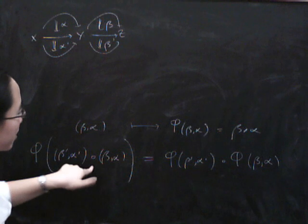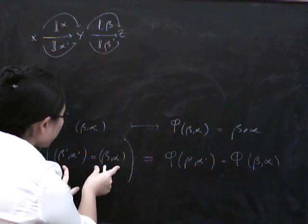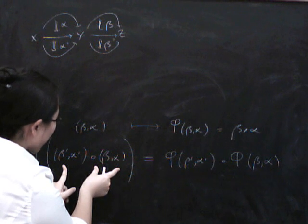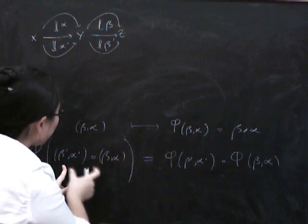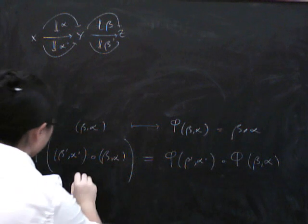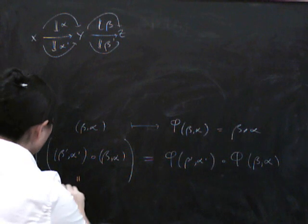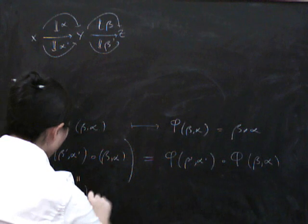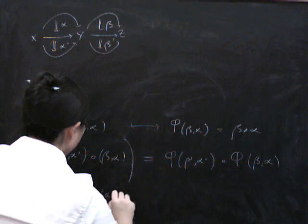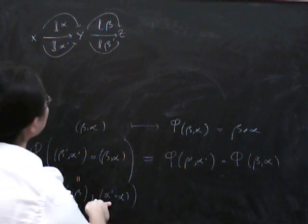Now let's see what this formula says. On the one hand, we've got to compose in the product category. So how do you compose these two morphisms in the product? Well, you just compose them point-wise. So what this actually is, is phi of (beta prime composed with beta, alpha prime composed with alpha).